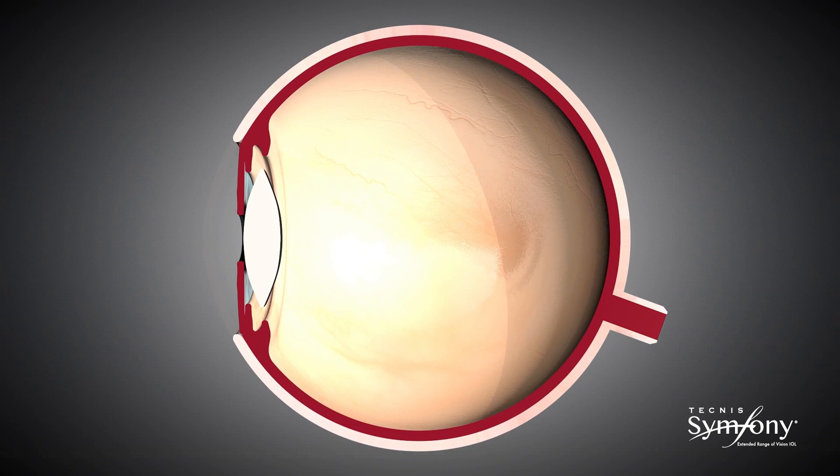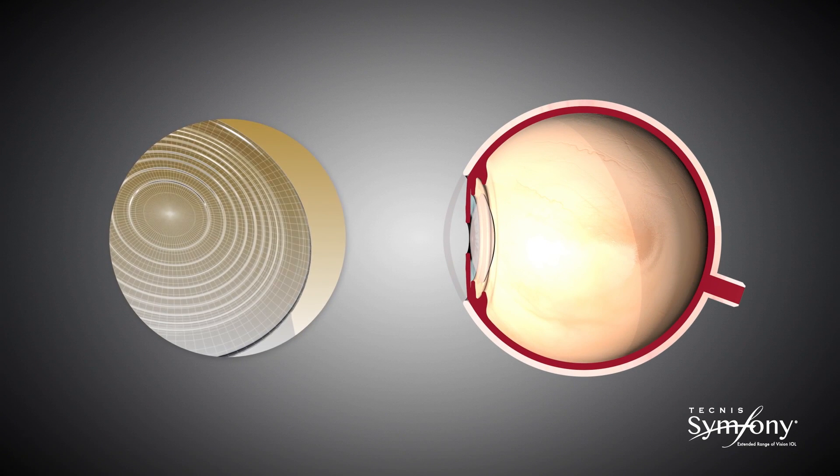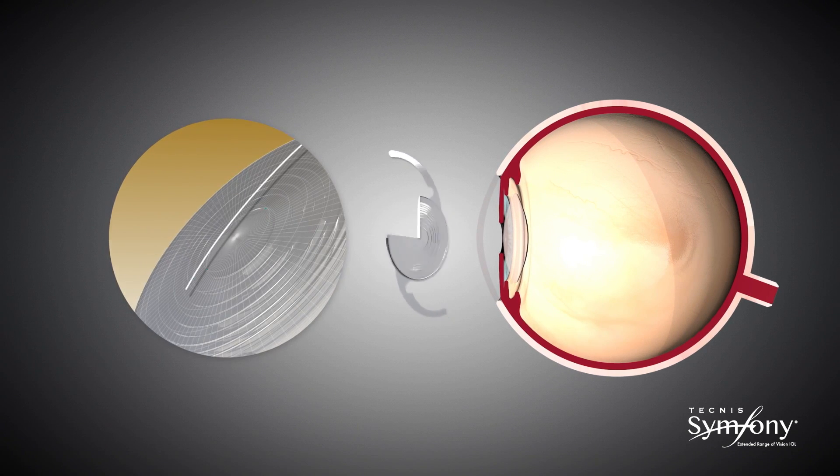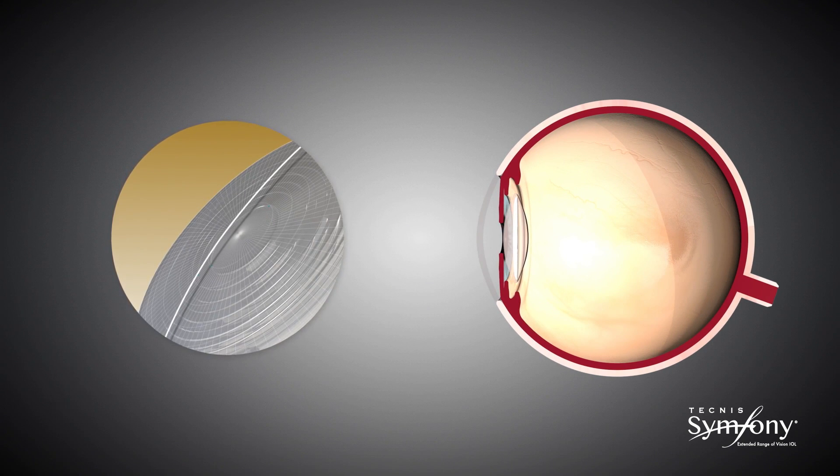Tecnis Symphony IOL delivers on this promise by utilizing two proprietary complementary enabling technologies, which are the Echelette design that extends the depth of focus, and the achromatic technology which corrects chromatic aberration.